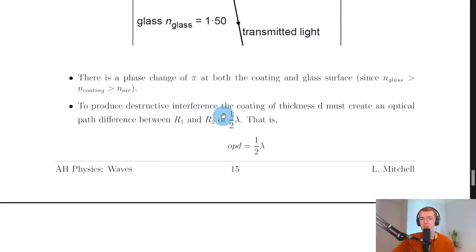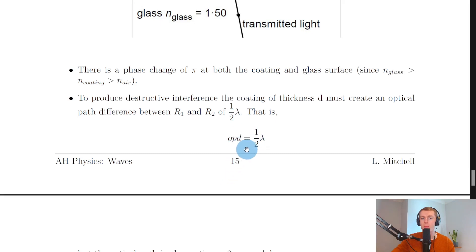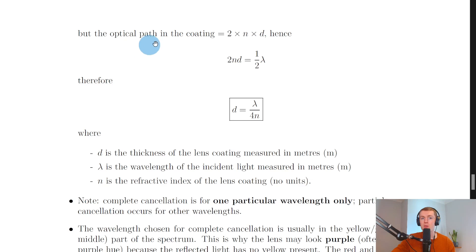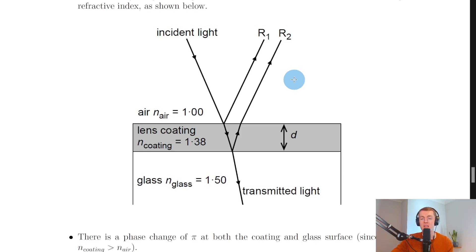So we could say that to produce destructive interference, the coating of thickness d must create an optical path difference between R1 and R2 of half a wavelength. That is, we could say the optical path difference OPD is equal to λ over two or half λ. But the optical path in the coating is two times n times d, and we can see that from the picture. So remember the optical path difference is the difference in the distance traveled between rays R1 and R2, taking into account the distance traveled in the more dense medium here.